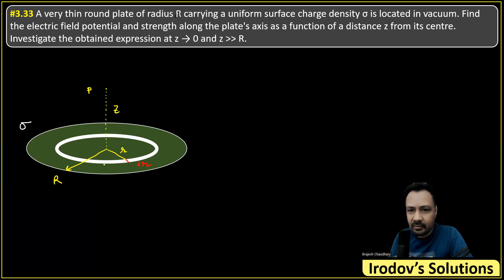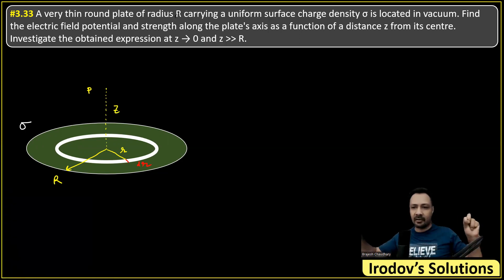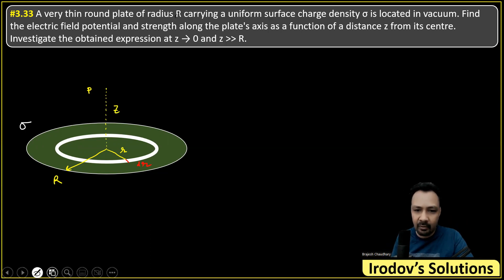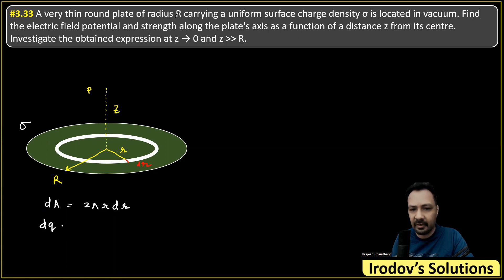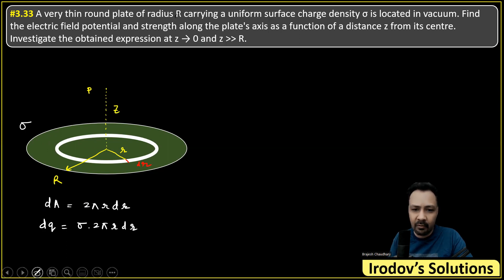The area of this element: just cut the ring and straighten it — the length becomes 2πr and thickness is dr, so area dA = 2πr dr. Since the charge per unit area is sigma (the surface charge density), the charge on this ring is dq = sigma · 2πr dr.